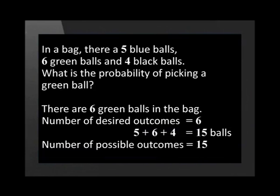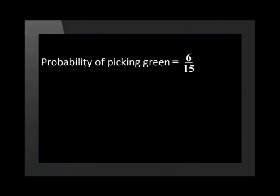Therefore, the number of possible outcomes is 15. The probability of picking a green ball is 6 over 15. We can reduce this to its lowest form: 2 over 5. As a decimal, the answer is 0.4. As a percentage, it is 40%.